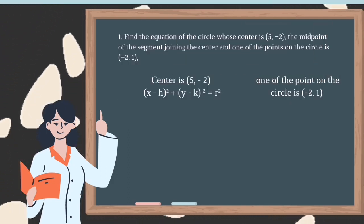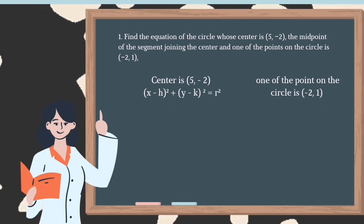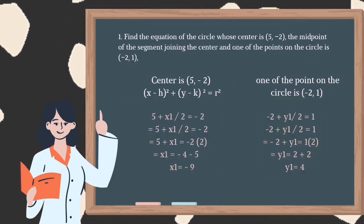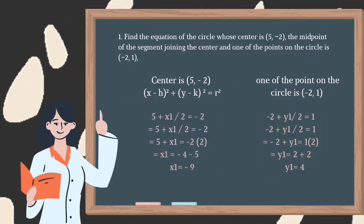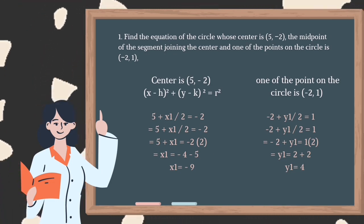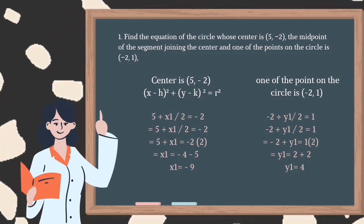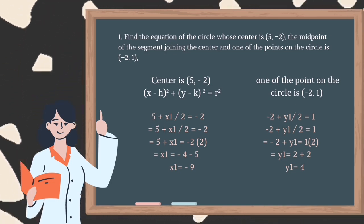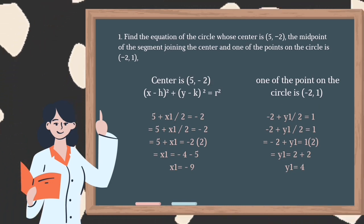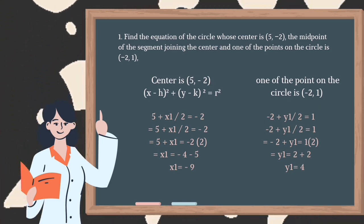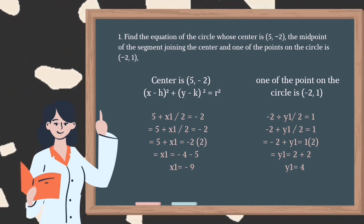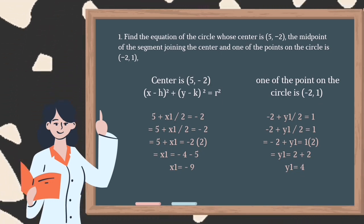One of the points on the circle is (-2, 1). So using the midpoint formula, we can say that (5 + x₁) / 2 is equal to -2. Then simplify: 5 + x₁ is equal to -2 multiplied by 2, then x₁ is equal to -4 minus 5.